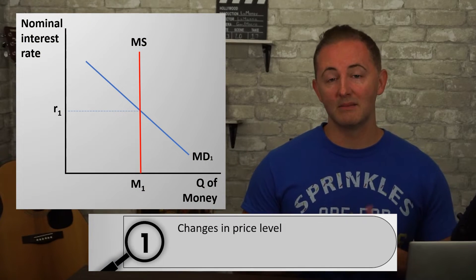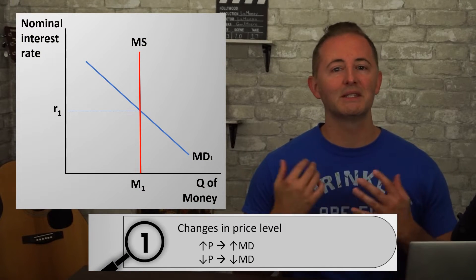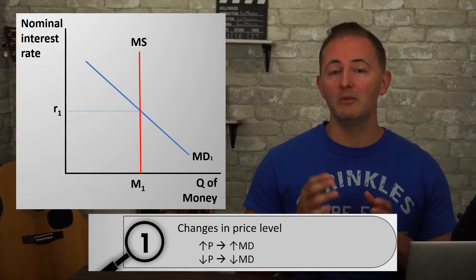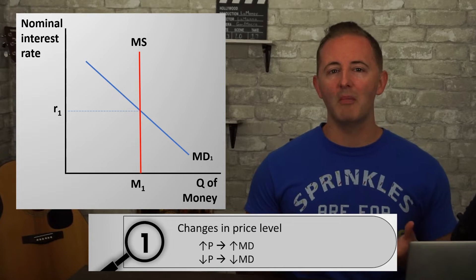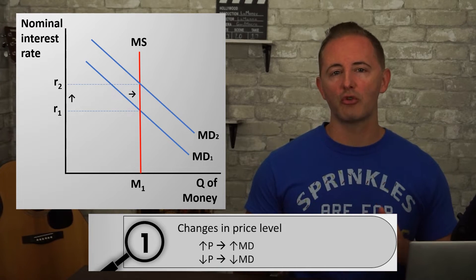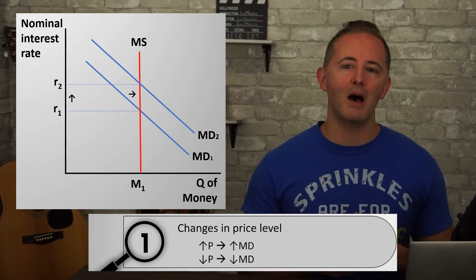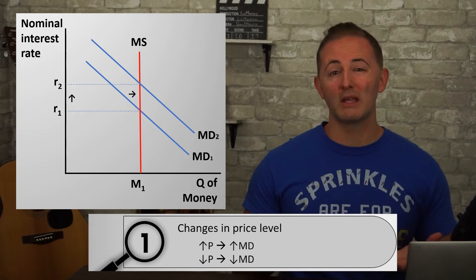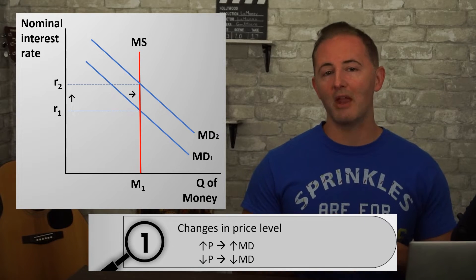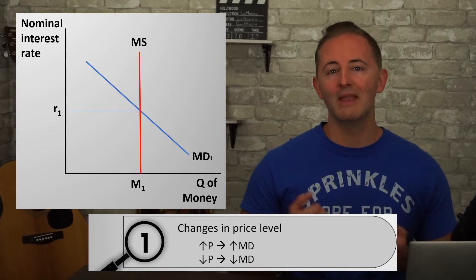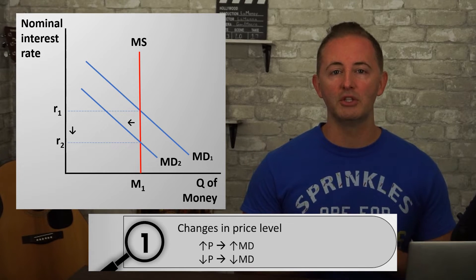The first two shifters are by far the most important: changes in the price level and real GDP. When the price level rises — aka when there's been inflation — stuff costs more. As a result, we now need more money to buy the same stuff as before, so our demand for money increases, shifting the MD curve to the right and leading to a higher nominal interest rate. Of course, if the price level were to fall and things were cheaper, we wouldn't need as much money, so our demand for money would decrease, shifting the MD curve to the left and reducing the nominal interest rate.